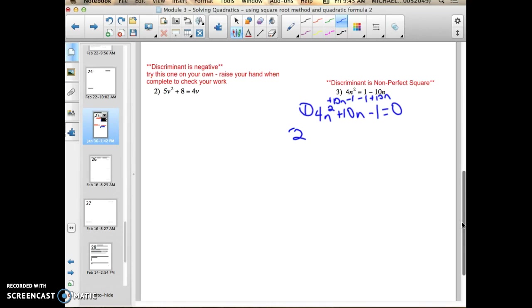Second step, identify A, B, and C. My A term is 4, my B term is positive 10, my C term is negative 1.